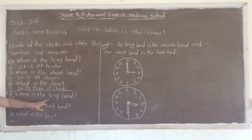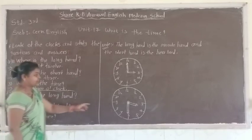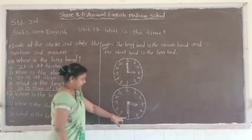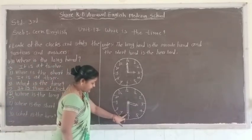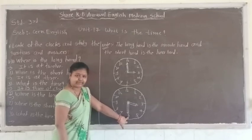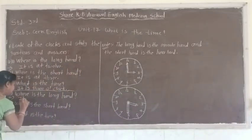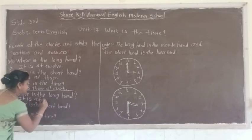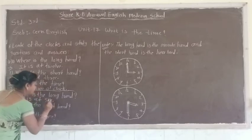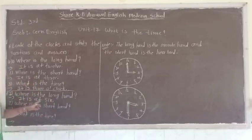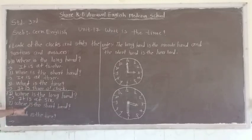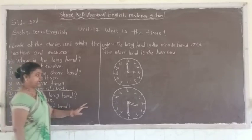Where is the long hand? Big hand? No. Long hand. The long hand is at 6 or 5. Where is the short hand? Short hand is where?